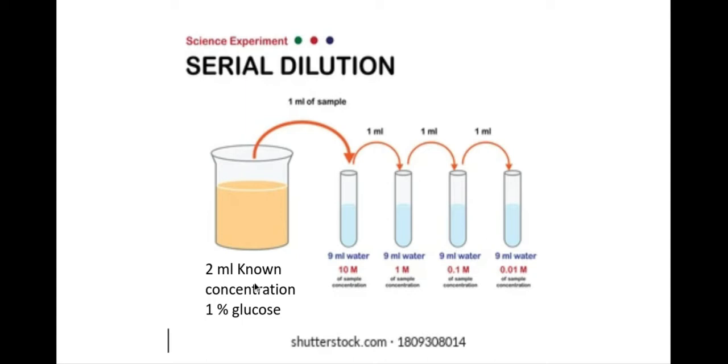For example here, I've been provided with two milliliters of a one percent glucose concentration. I need to make several different concentrations from this. So what I do is I take half of that out, so one mill, and pop it into the test tube.